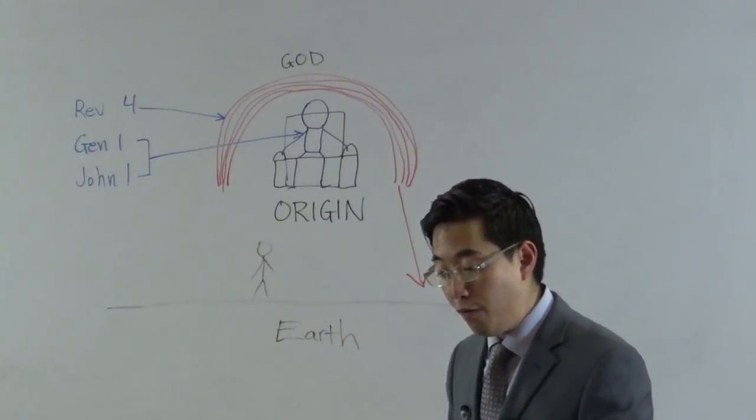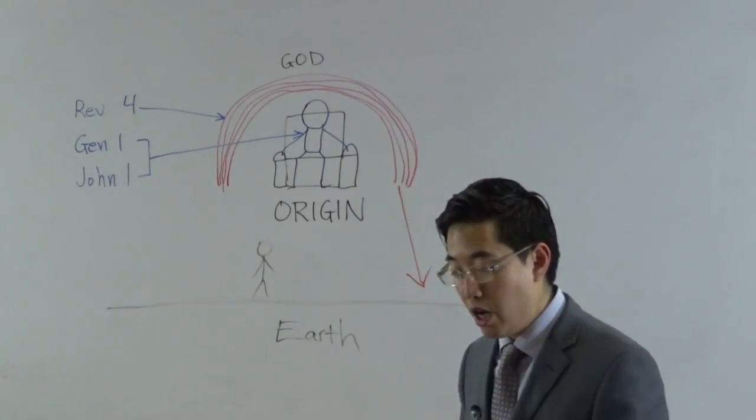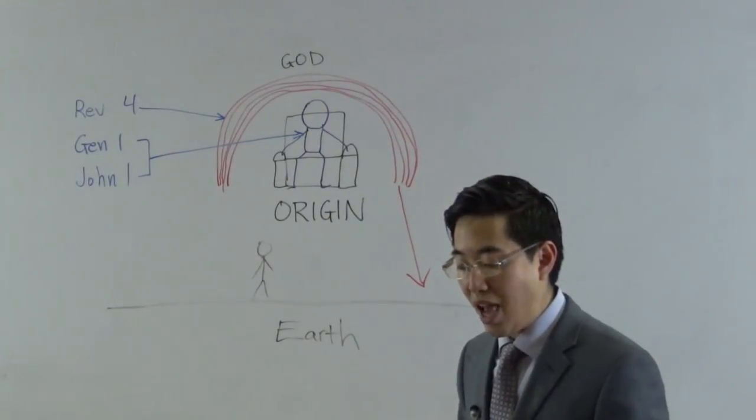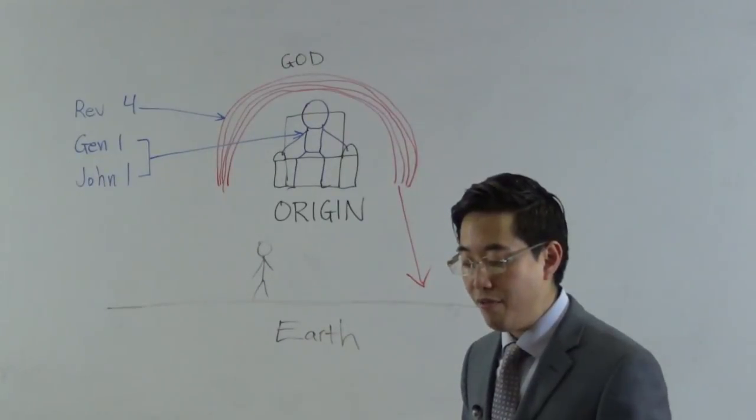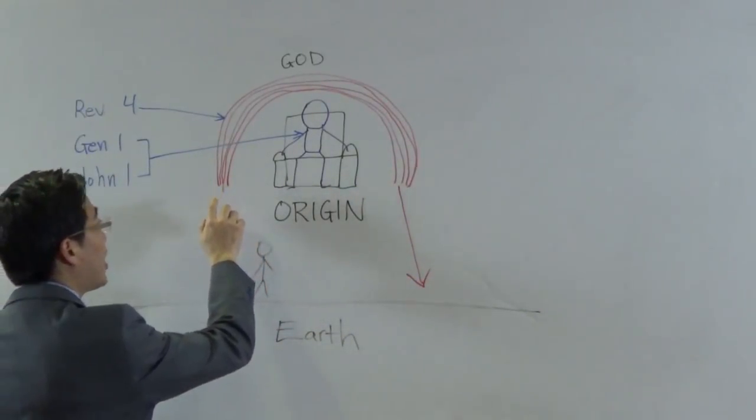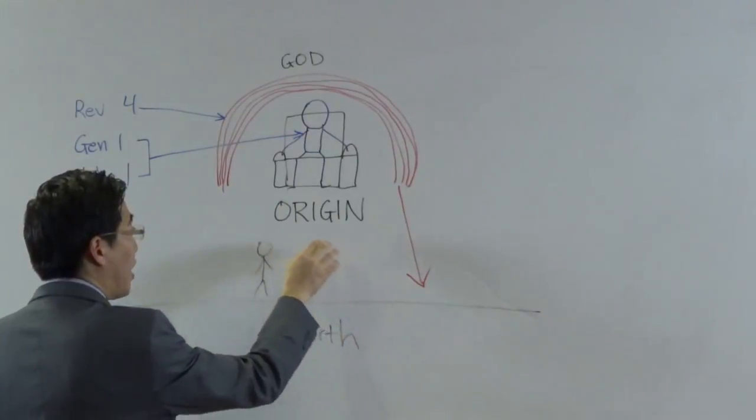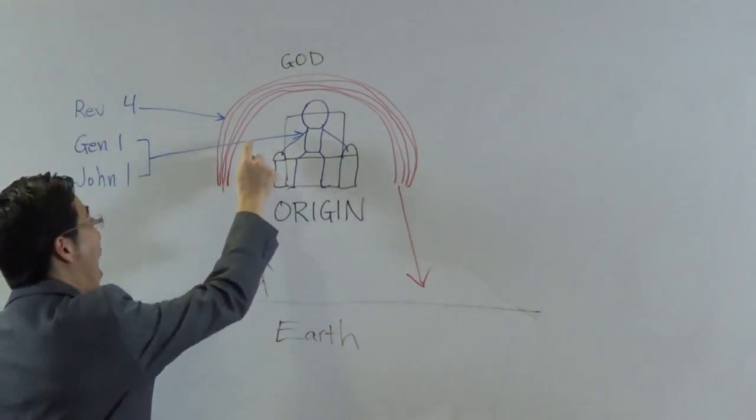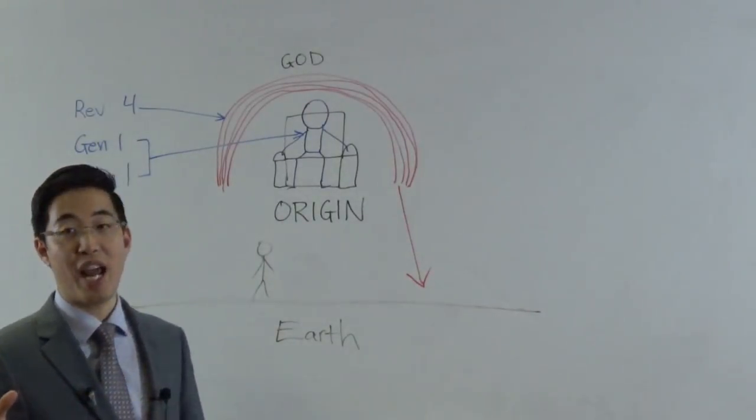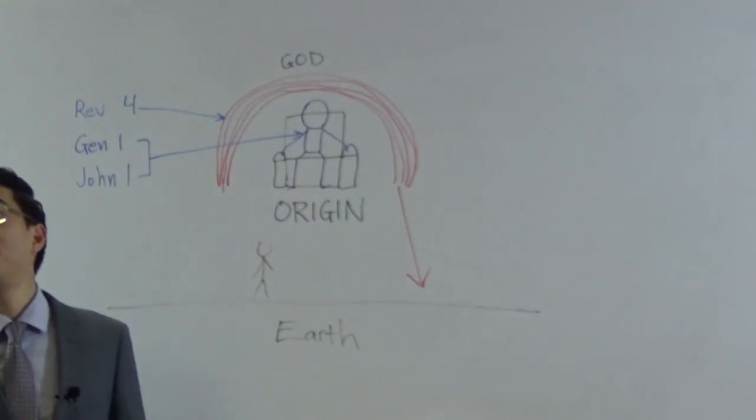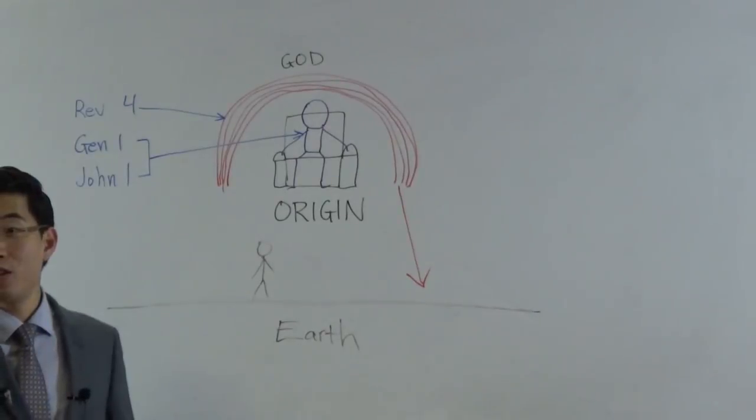The water shall no more become a flood to destroy all flesh. This is a covenant that shows between God and men that he will not send a flood upon the earth again. Before God, as light, as rainbow, was able to create all the universe at Genesis 1, there was a universal flood at Genesis 1:2. The Spirit of God moved upon the face of the waters, and after that God said, let there be light.